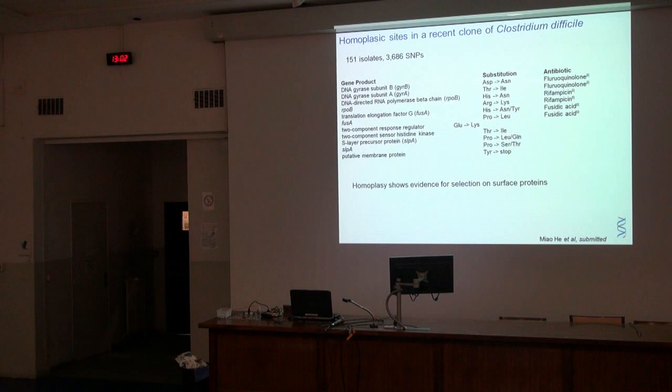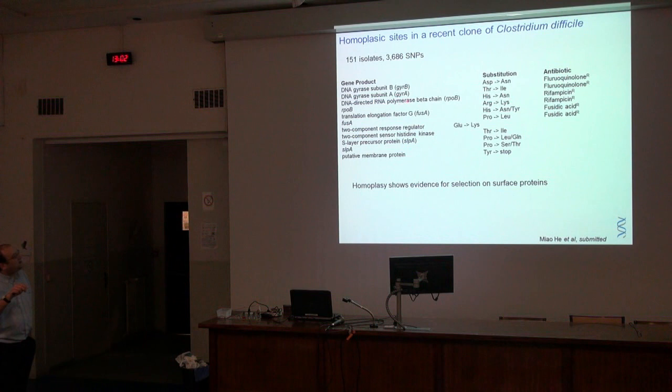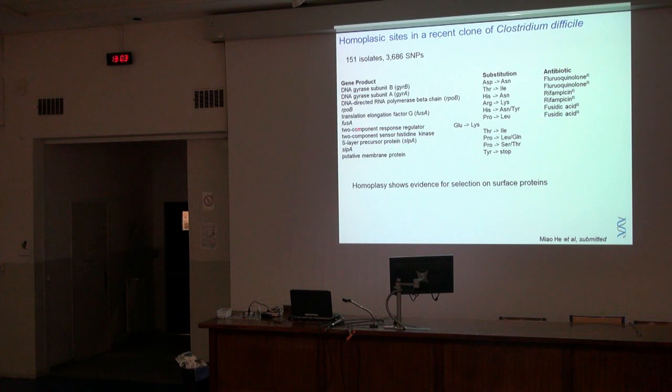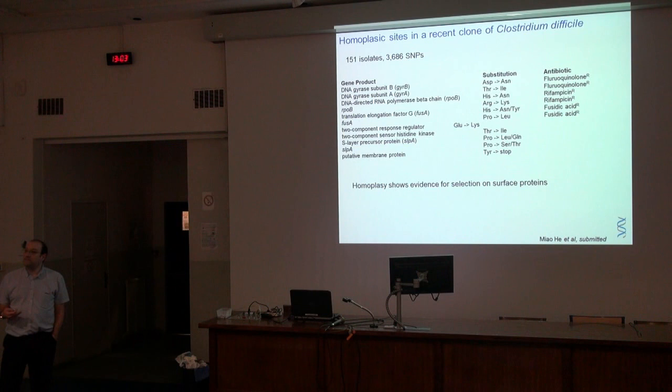In Clostridium difficile, with 151 isolates and about 4,000 SNPs — again, a very recent clone, the 027 clone — after removing a few large recombinations, very few SNPs don't fit the tree. Of those, we again see drug resistance, but we're also starting to see surface proteins, two-component sensor regulators, the major surface protein SLPA, and other membrane proteins. This is almost certainly evidence of selection by the immune system — point mutations in surface proteins selected by the immune system.